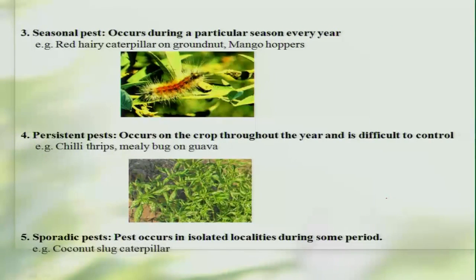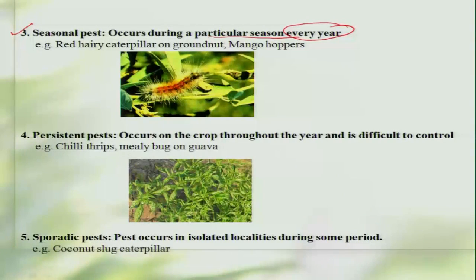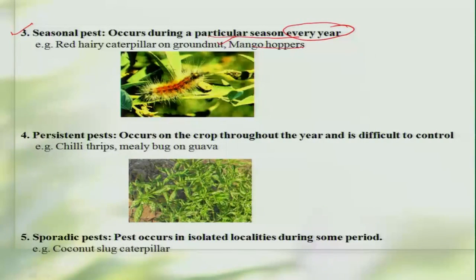Some insects are referred to as seasonal pests — these pests occur during a particular season every year. A good example is the red-headed hairy caterpillar on groundnut or peanut, and sometimes the mango hoppers. Whenever groundnut is grown, especially during the monsoon season, this pest will occur on the crop and cause damage.